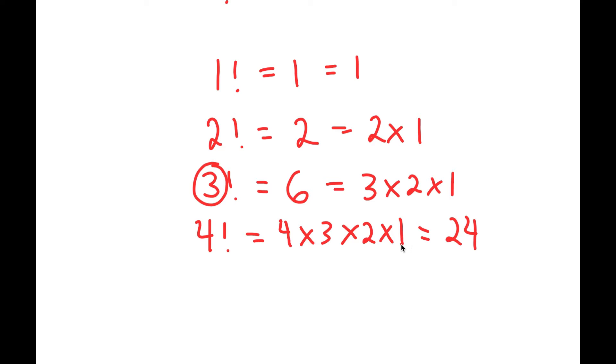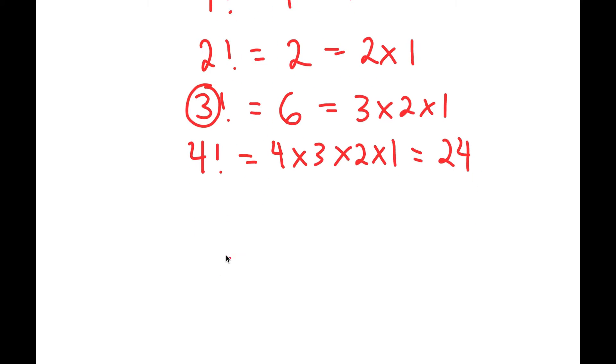Now that we know what a factorial is, how would we calculate something like sub factorial of three? Well, what a sub factorial is, is it's the factorial. So let me actually write the formula. A sub factorial is n factorial times the summation of zero through n of negative one to the power of k over k factorial.